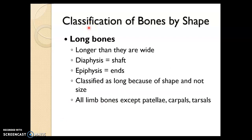Let's classify bones by their shape. Long bones are longer than they are wide. Some bones may not seem long, but they are considered long bones because of this definition. Take a tiny little finger bone called a phalanx — it's not very long, but it is longer than it is wide, which makes it a long bone. Long bones have a diaphysis and epiphysis, which we'll see in the next video.